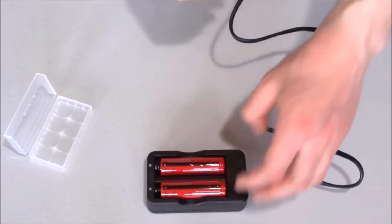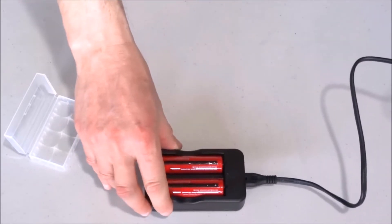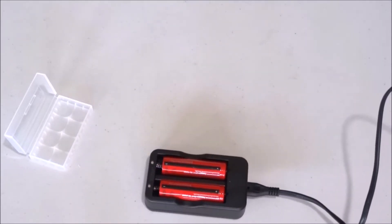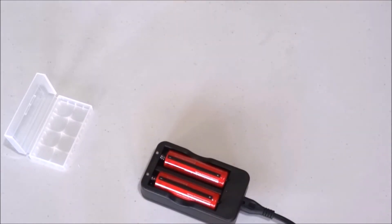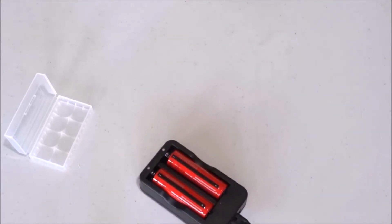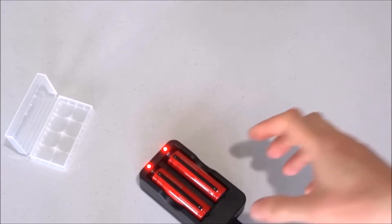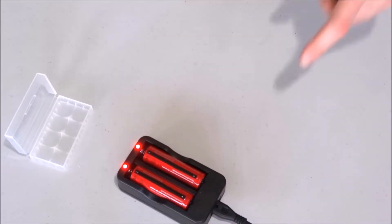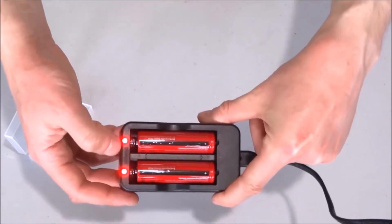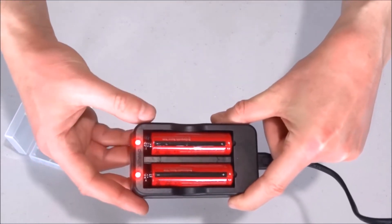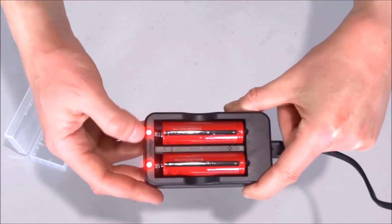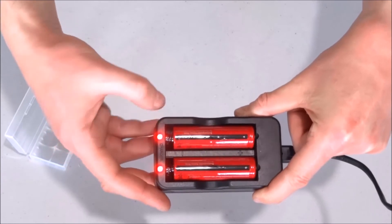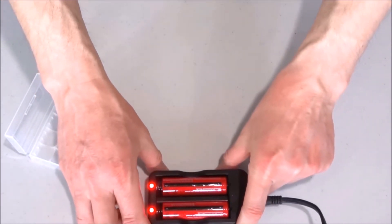Now we can plug the charger into power. While the batteries are charging, those two LEDs will be red. Once they are fully charged, they will turn green, indicating that the batteries are ready to use.